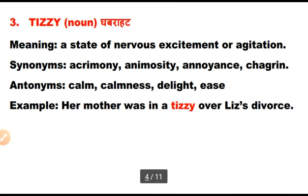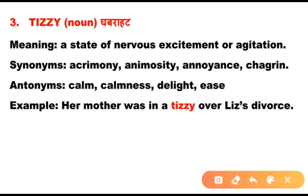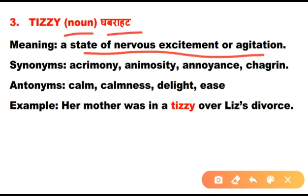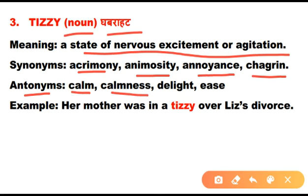Number three is dizzy. Dizzy is a noun meaning ghabrahat — a state of nervous excitement or agitation. Synonyms: acrimony, animosity, annoyance, chagrin. Antonyms: calm, calmness, delight, ease.